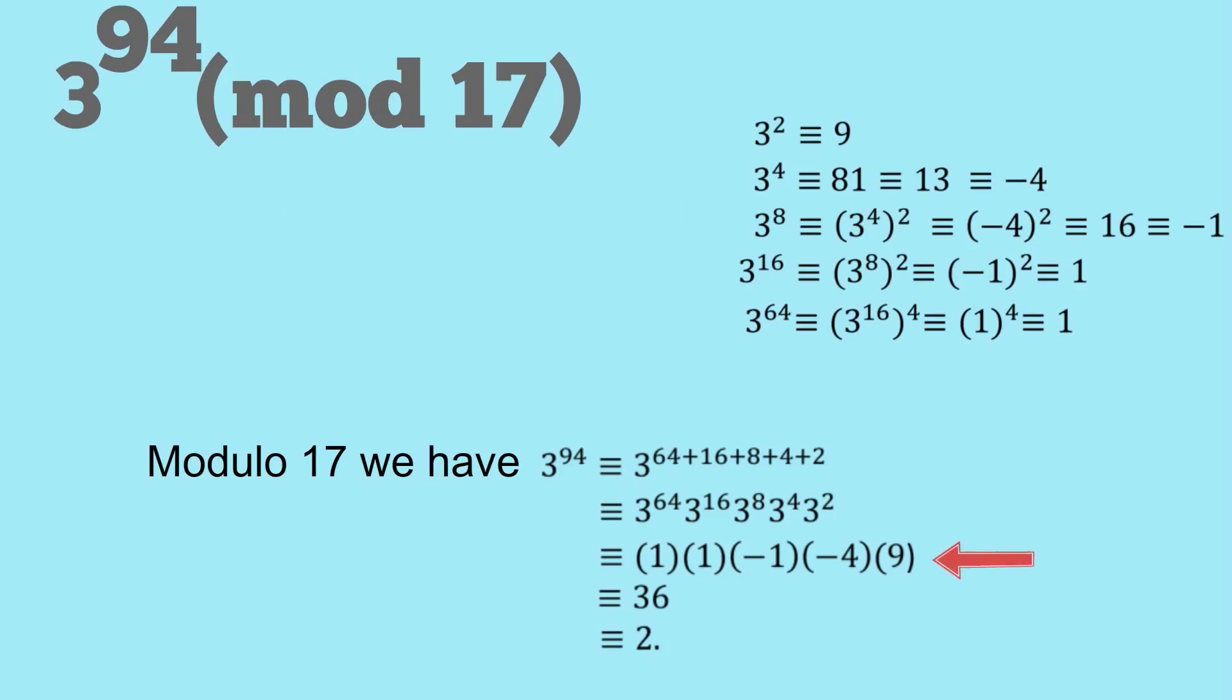And now we can just fill in what that is. So that's equivalent to 1 times 1 times negative 1 times negative 4 times 9, which is equivalent to 36, which is equivalent to 2. And there's your answer.